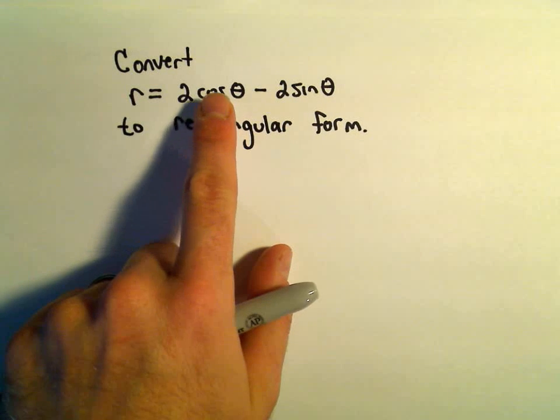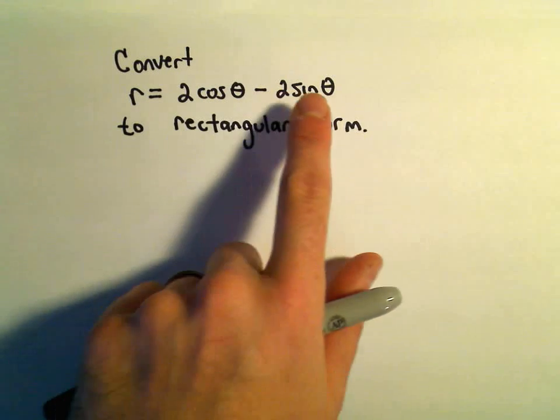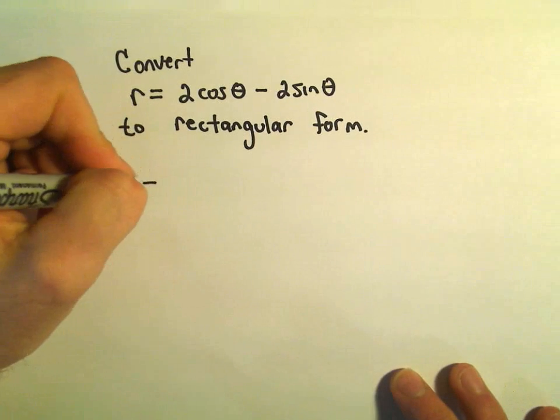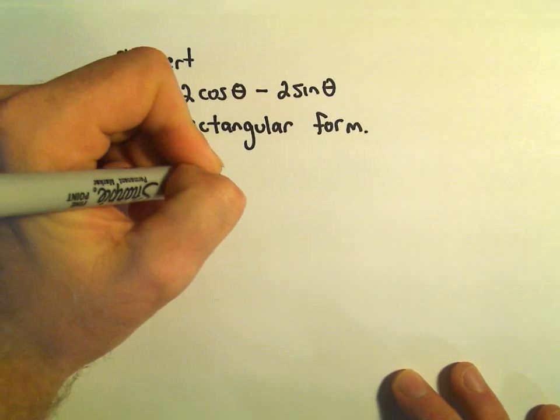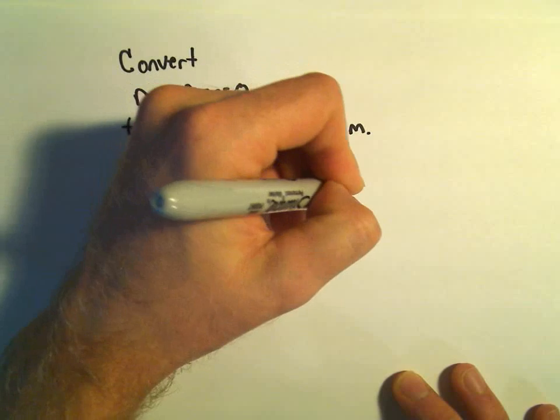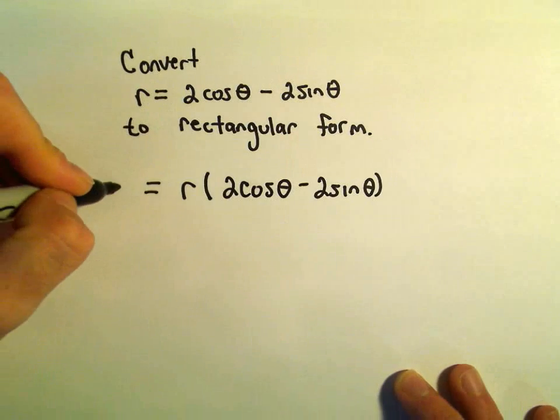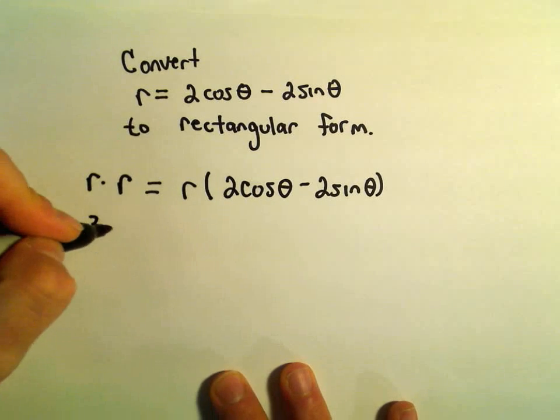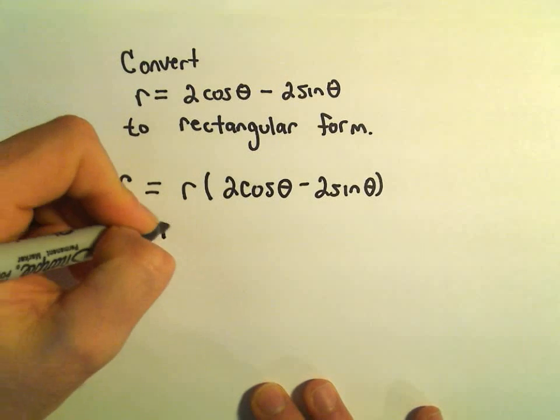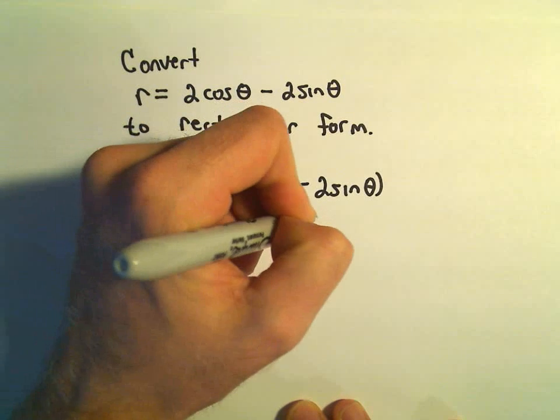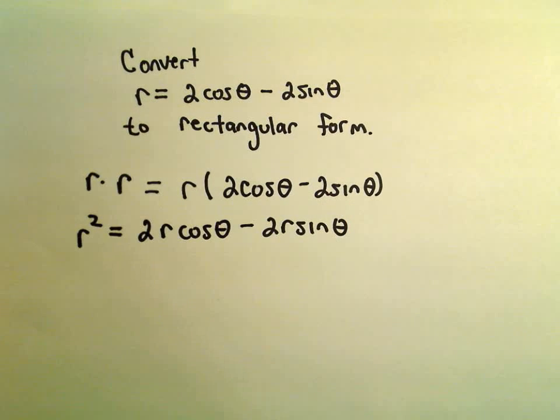So again, if only we had r cosine theta and r sine theta, I could replace those with x and y. Well, to make that appear, we can multiply the right side by r. But that means we also have to multiply the left side by r. So we'll have r squared on the left, and then we'll have 2r cosine theta minus 2r sine theta.